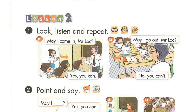Page 42, Lesson 2, Activity 1. Look, listen and repeat. A. May I come in, Mr. Locke? Yes, you can. B. May I go out, Mr. Locke? No, you can't.